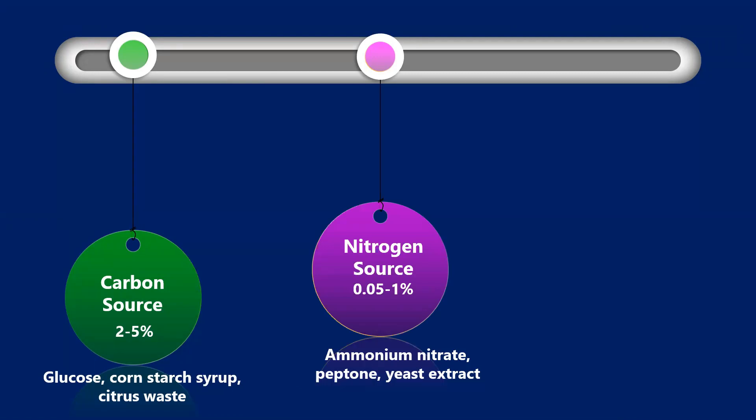But xanthan is produced in a nitrogen limiting condition. So for the production of xanthan we will require a nitrogen limiting condition. Thus a compromise has to be made between this and a particular monitoring of this process is very much required.